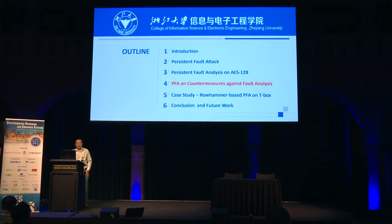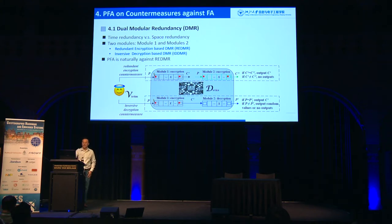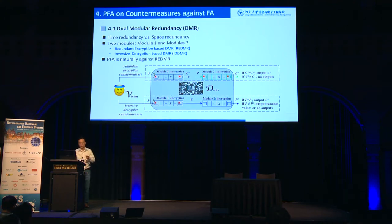We check how PFA works against countermeasures. Dual modular redundancy (DMR) is a well-known fault countermeasure, done with time or space redundancy. There are two types: REDMR (Redundant Encryption-based DMR), where two modules do the same encryption and compare results; and IDDMR (Inversive Decryption-based DMR), where the first module encrypts, the output is sent to the second module, and the decrypted plaintext is compared with the original to detect faults. PFA is naturally against REDMR, so we focus more on IDDMR.